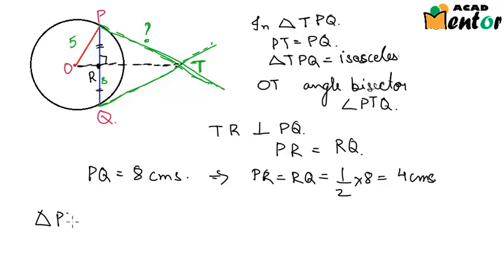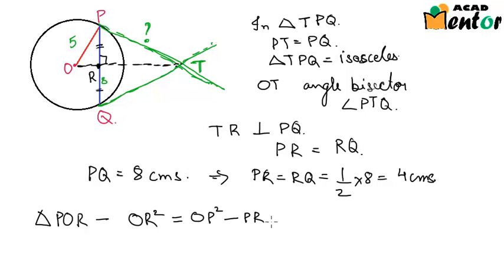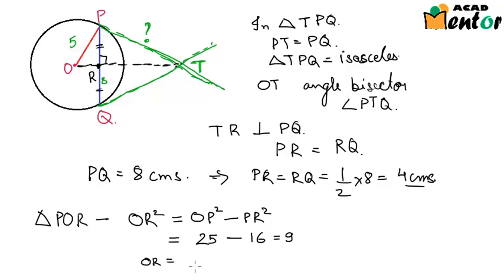Triangle POR is a right-angle triangle, right-angled at R, so we can apply the Pythagoras theorem to find OR. OR² equals OP² minus PR², which is 25 minus 16, equal to 9. So OR equals 3 cm.